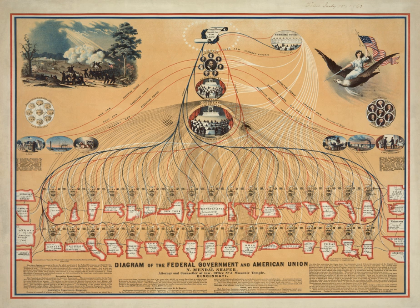Congressional oversight is intended to prevent waste and fraud, protect civil liberties and individual rights, ensure executive compliance with the law, gather information for making laws and educating the public, and evaluate executive performance. It applies to cabinet departments, executive agencies, regulatory commissions, and the presidency. Congress's oversight function takes many forms.